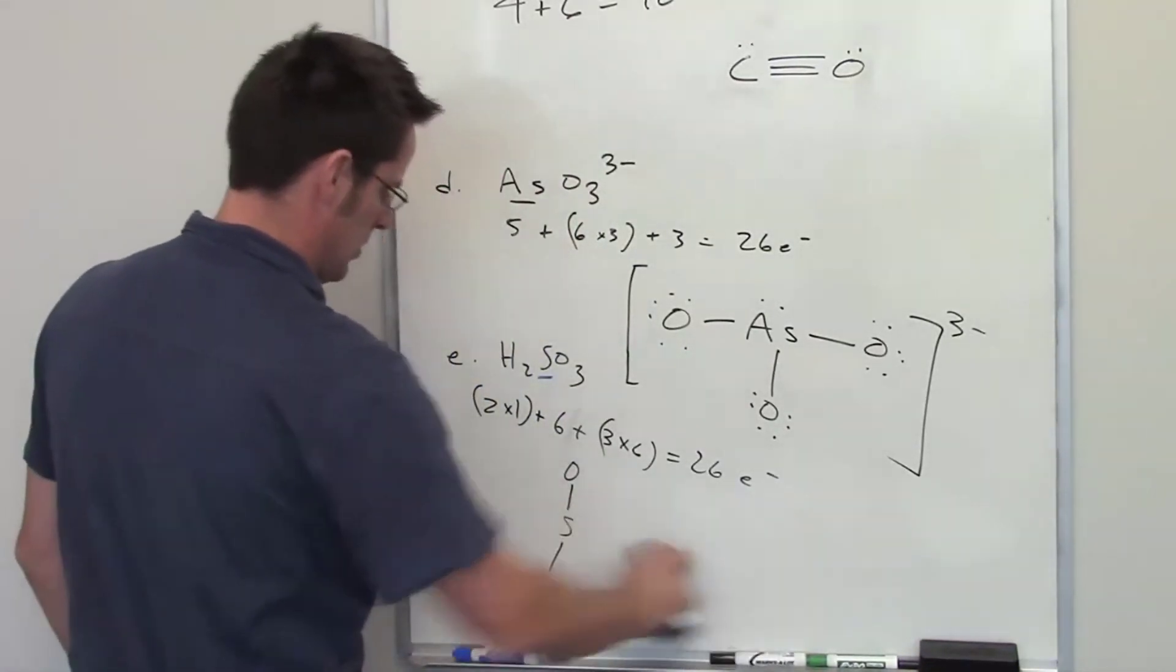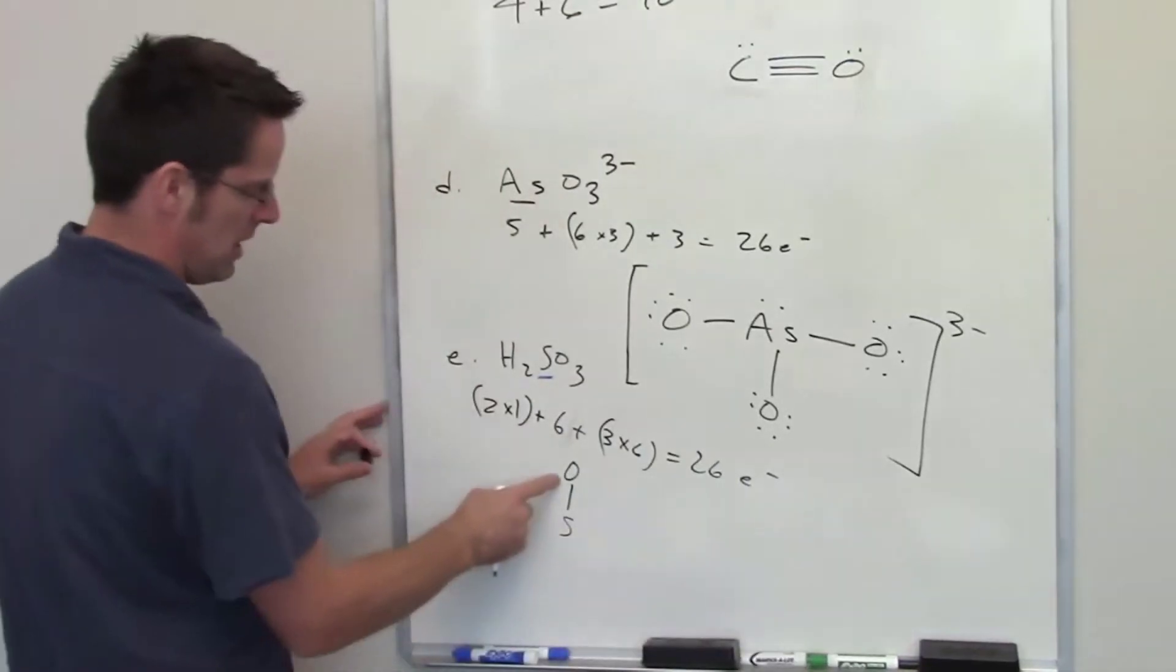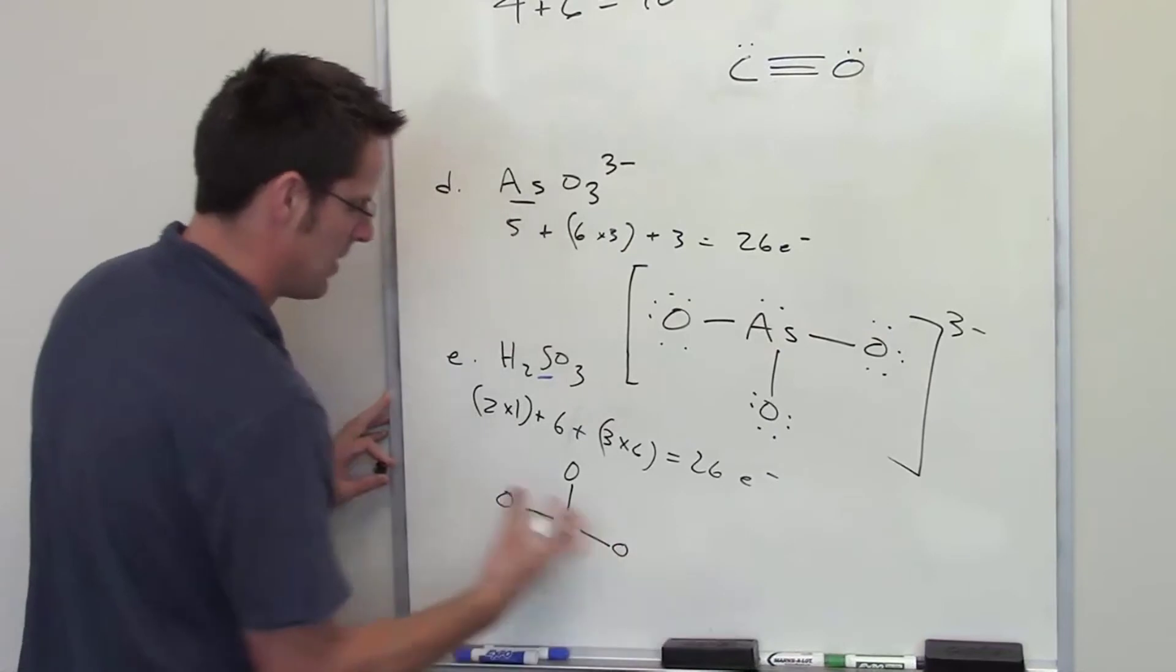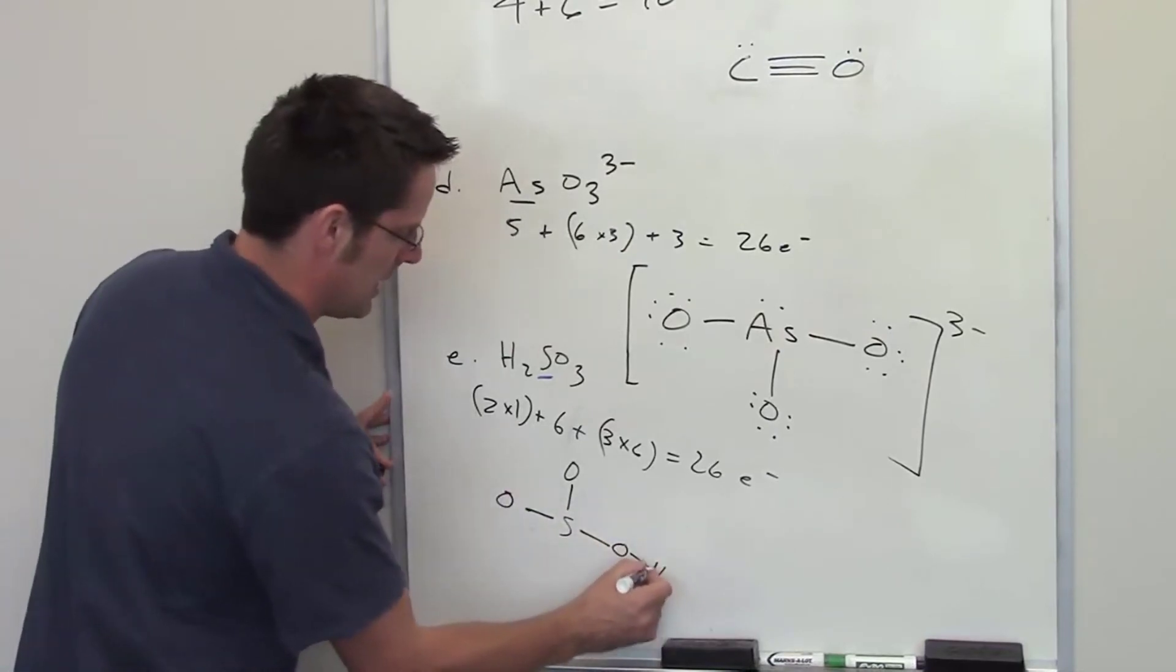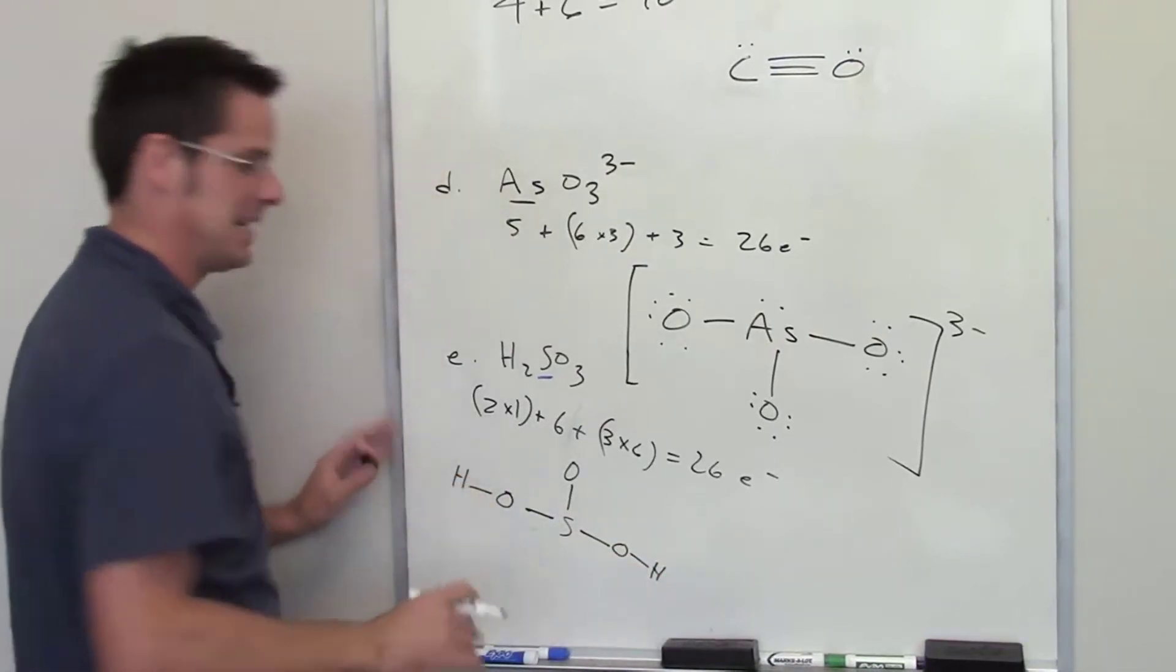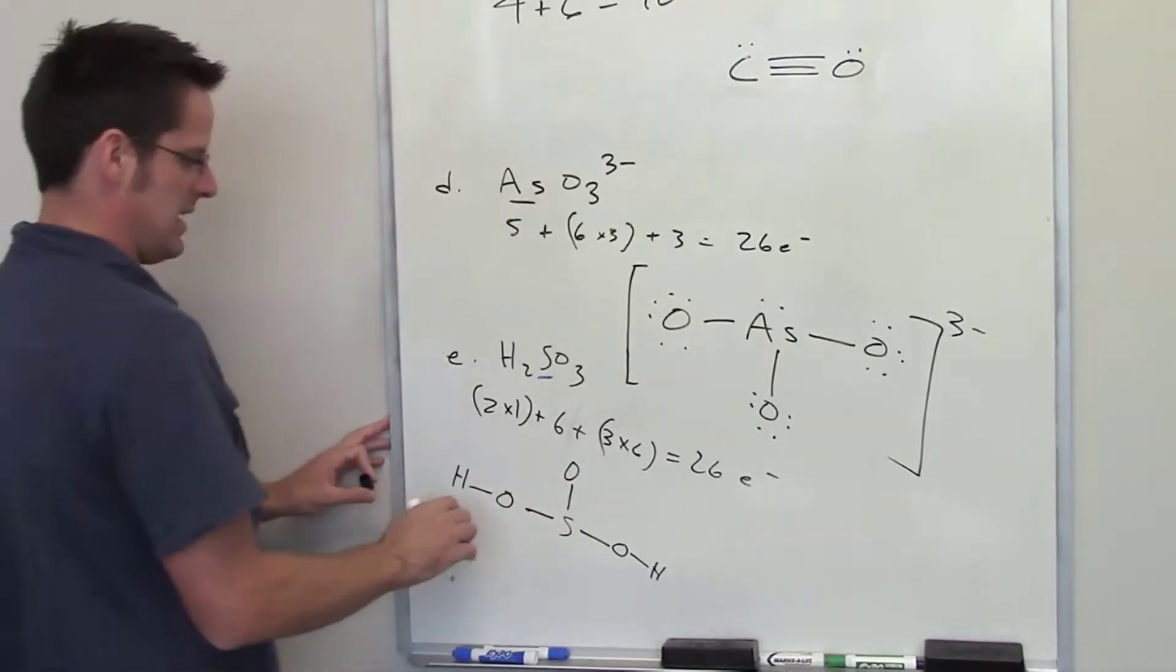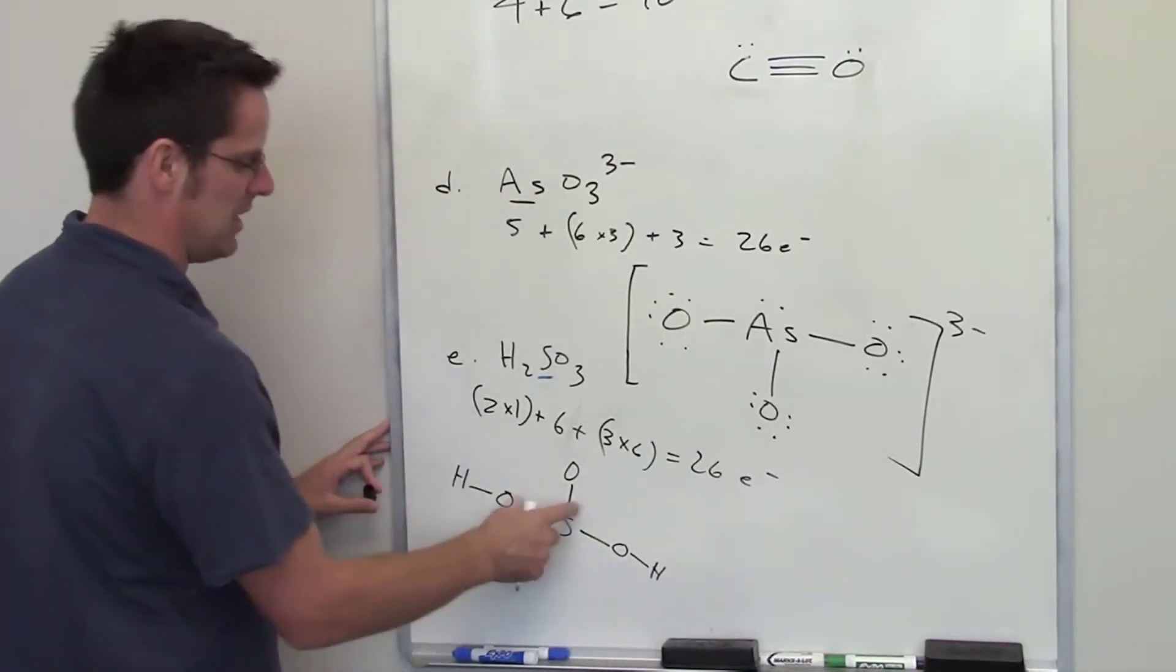So I'm going to go ahead and put sulfur in the middle, and I'll put a bond to an oxygen, another bond to an oxygen. It states in this problem that hydrogen is bonded to oxygen. So what we could do is we could put a bond to one oxygen up here, another bond to another oxygen, another bond to another oxygen, and then we could throw some hydrogens on here. So what I've done here is I've got 2, 4, 6, 8, 10 electrons laid down.